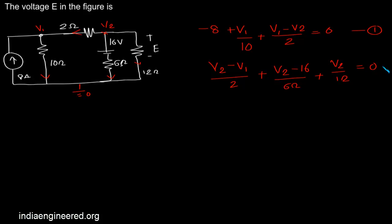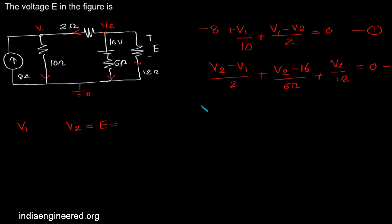This will be zero. That is our second equation. Now we have two equations and two unknowns. We can solve this to find out the value of V1 and V2. V2 is the same as the voltage across 12 ohms and that is equal to E. So we can solve these equations.